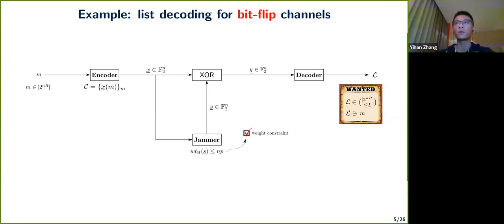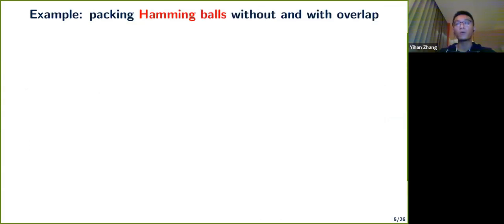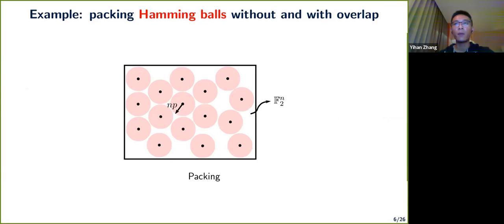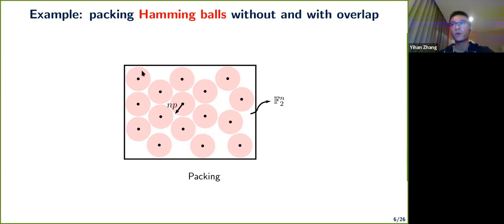This is the list decoding problem from a channel coding perspective. It's equivalent to a geometric problem: in the Hamming space {0,1}^n we have Hamming balls of radius np centered around codewords. For list size l=1 (unique decoding), we want those balls to be disjoint — this is sphere packing in Hamming space.